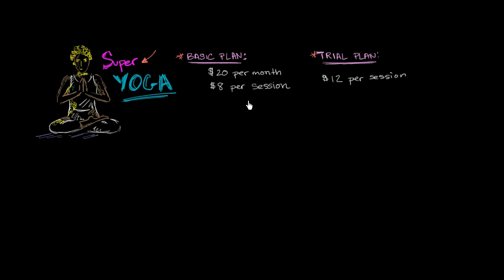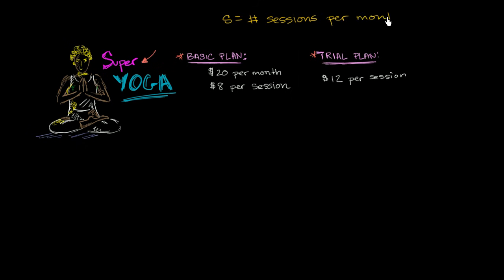So this seems interesting, but I'm a little bit confused — which plan should I take? A good place to start is to think about how much I would pay depending on how many sessions I actually attend. Let's define some variables: S is the number of sessions per month that I attend at Super Yoga, and C is my total monthly cost.